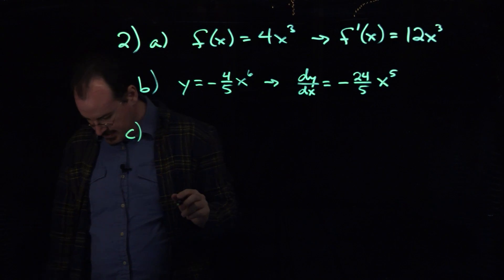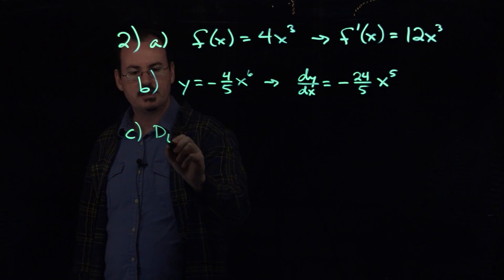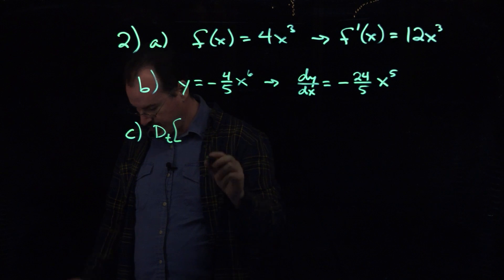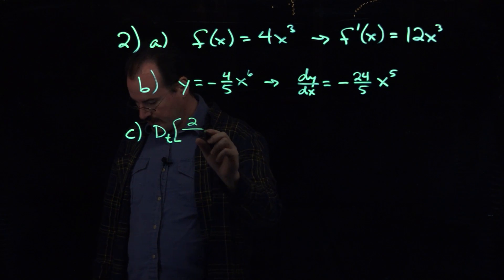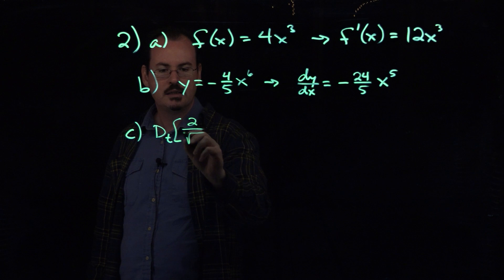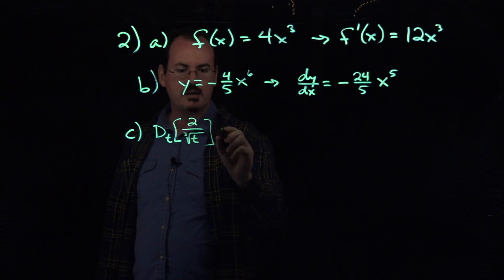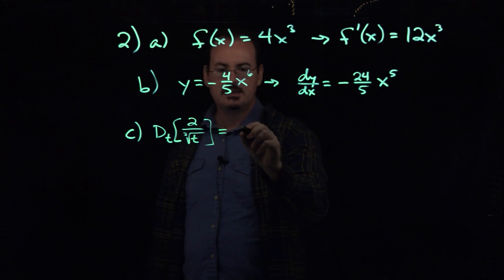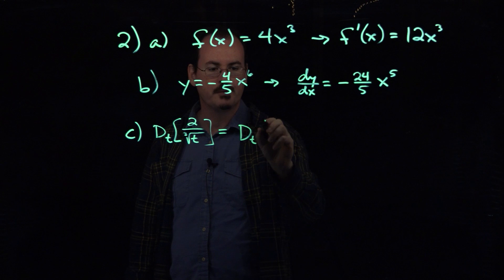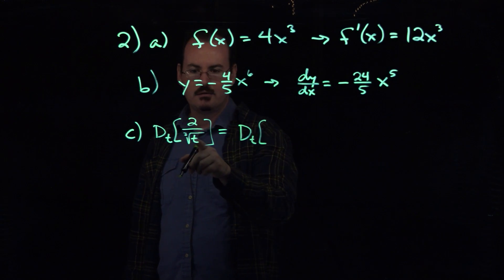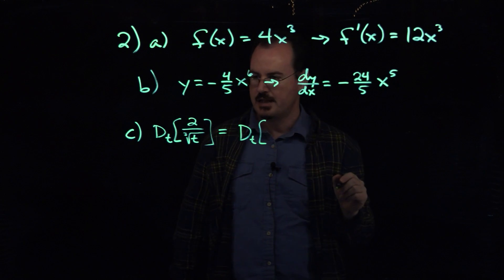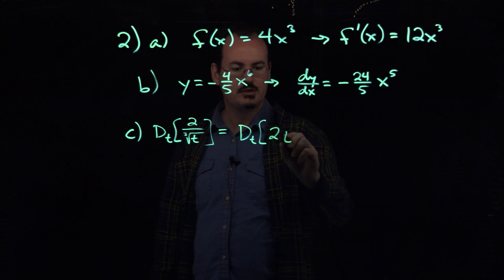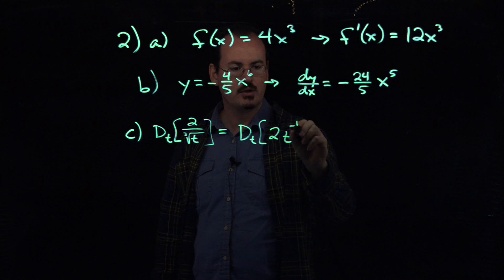For part c then, this is just a bit of a different notation here, but it means the same thing. It just means take the derivative of the thing that's within the brackets. So we've got 2 over the cube root of t. Now remember that what we want to do here is first write this as a power function. Since it's in the denominator, I can move it to the numerator and change the sign of the exponent. And since it's a cube root, that's a one-third power. So I can rewrite this function as 2t to the negative one-third power.